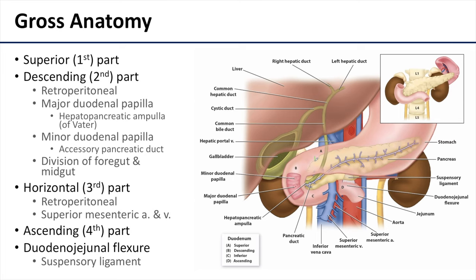The superior or first part of the duodenum receives chyme from the stomach through the pyloric canal. The second or descending part of the duodenum receives secretions from the gallbladder, liver, and pancreas through the major duodenal papilla. If there's an accessory pancreatic duct present, that accessory pancreatic duct drains through a minor duodenal papilla, which is typically more proximal in the gut tube than the major duodenal papilla.